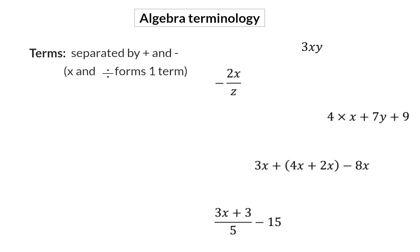Here are a few examples. In our first example, we have 3 times x times y, which means we have one term. And the same goes for our second example. Here we have minus 2 times x, which is one term, divided by z, which still only makes it one term.